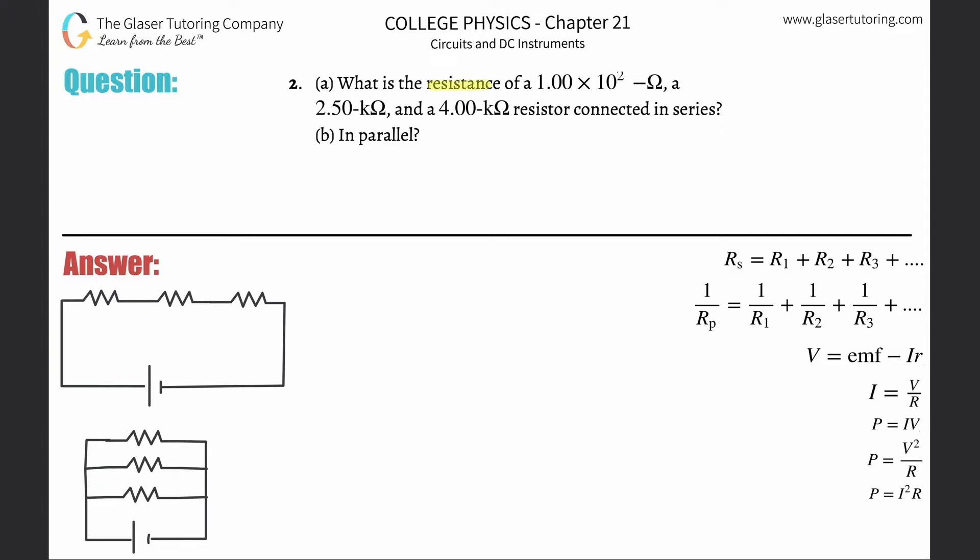Number two, letter A: What is the resistance of a 1×10² ohm, 2.5 kilo-ohm, and a 4 kilo-ohm resistor connected in series? I got two pictures on the left - this is series, this is parallel. You definitely want to become familiar with how they look.